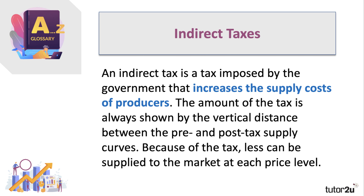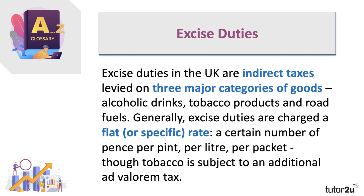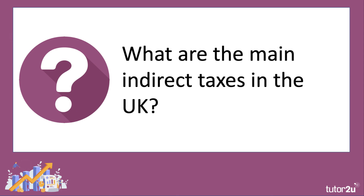You often hear the phrase 'excise duties' when covering this topic. Excise duties are indirect taxes levied in the UK on three main categories of goods: alcohol, tobacco, and fuel. Generally an excise duty set by customs and excise is charged at a flat or specific rate — for example, pence per pint, pence per litre of diesel, or pounds per packet of cigarettes. Tobacco actually has both a specific duty and an additional VAT.